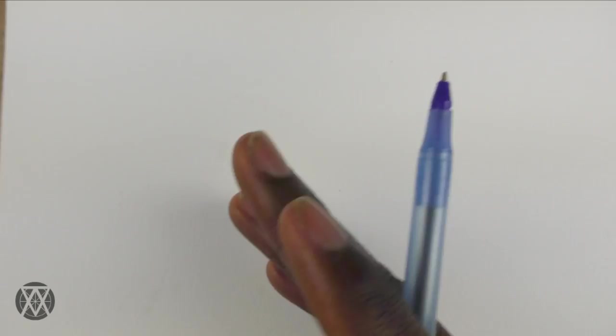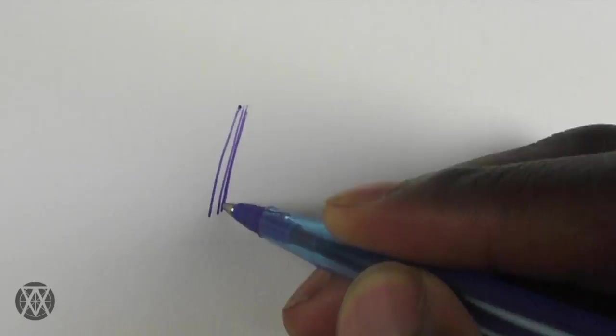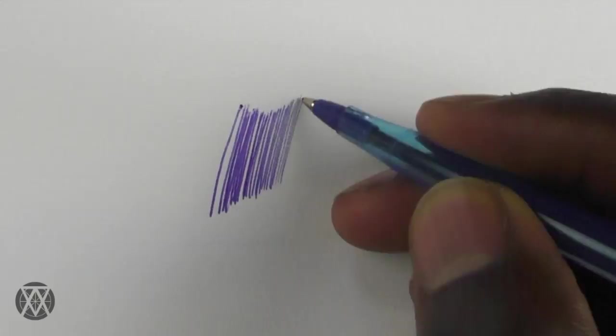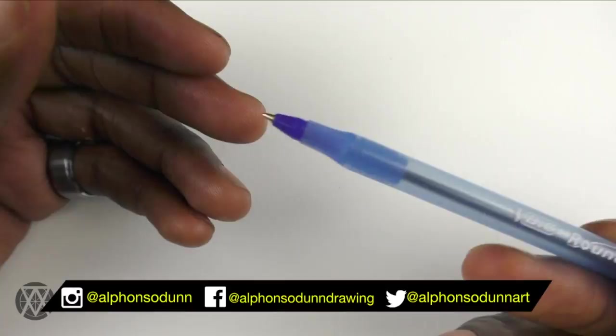Now when shading with ballpoint pens, one of the most underused properties is its ability to create really light marks. It's perhaps one of the only ink drawing instruments that allows us to do this, and yet we don't take enough advantage of it.